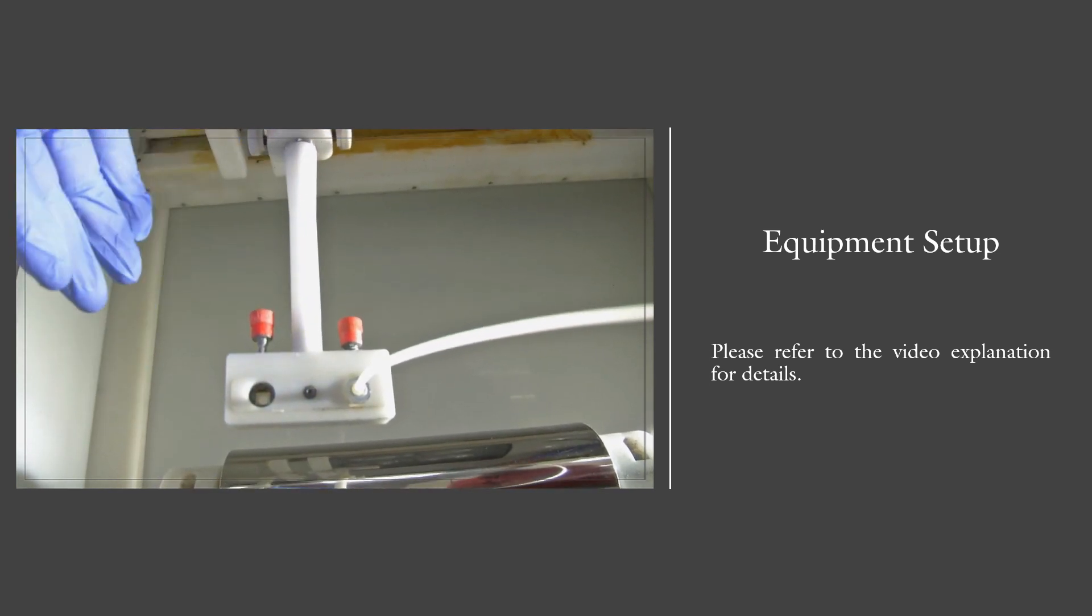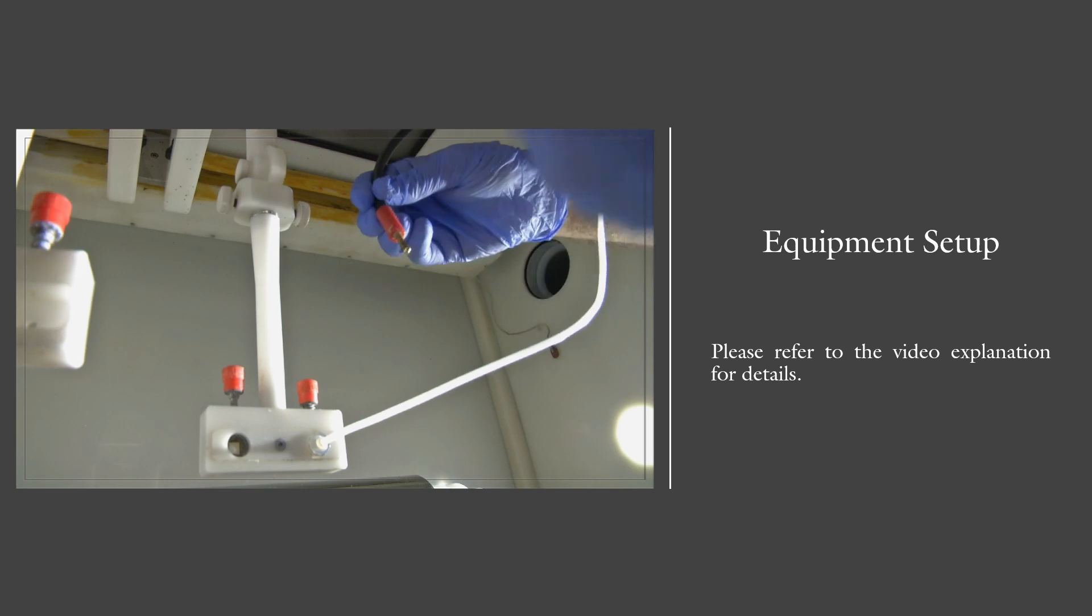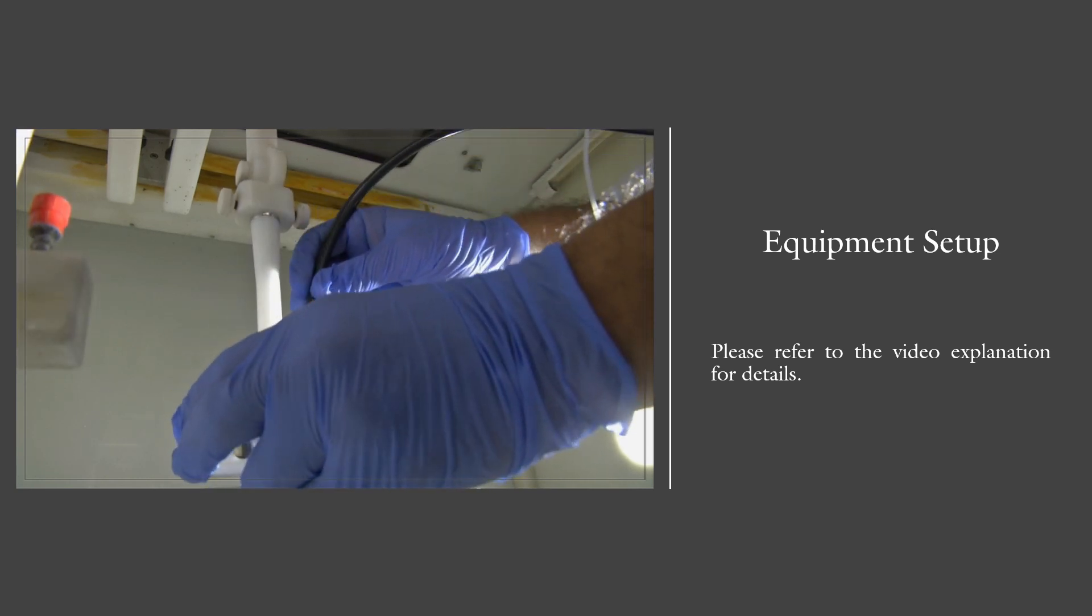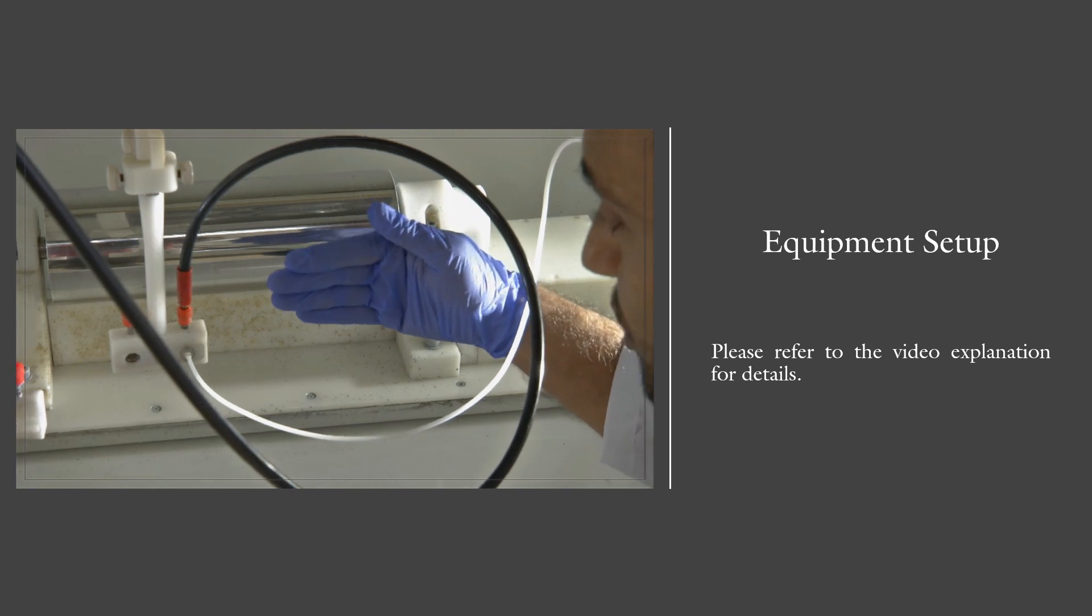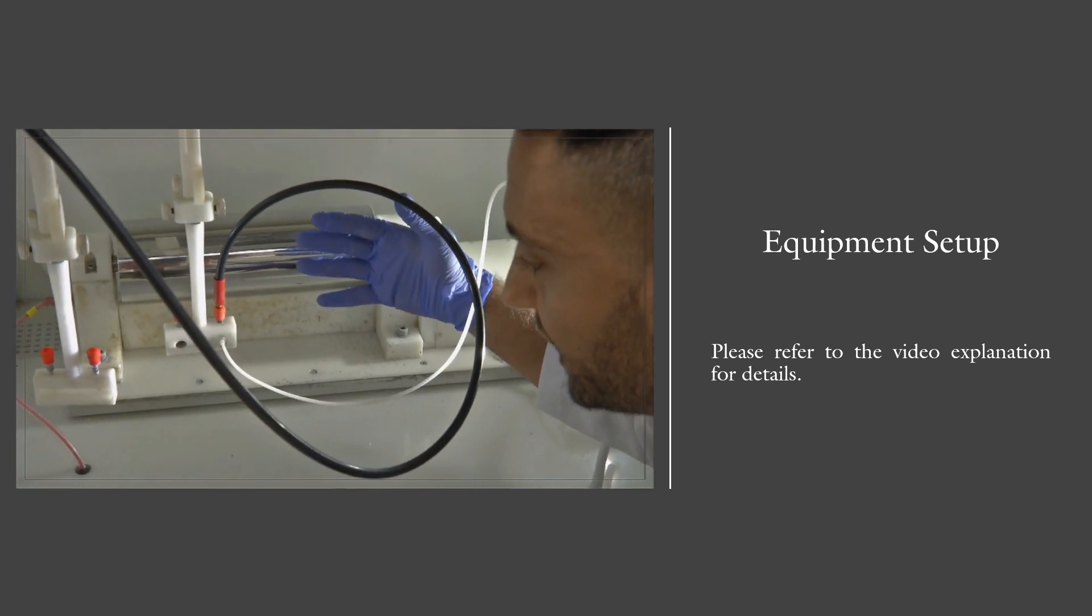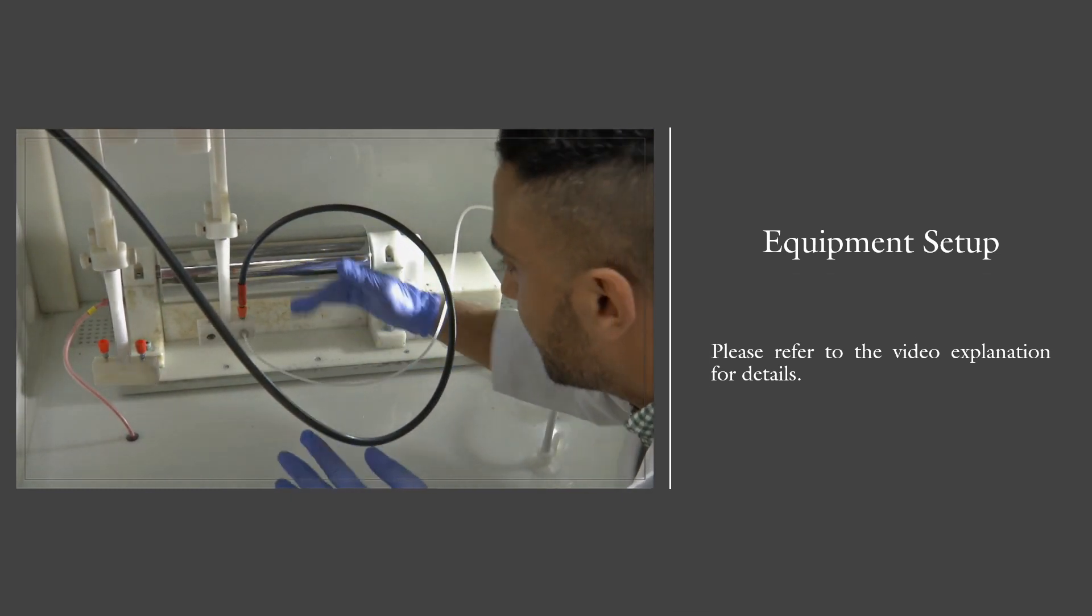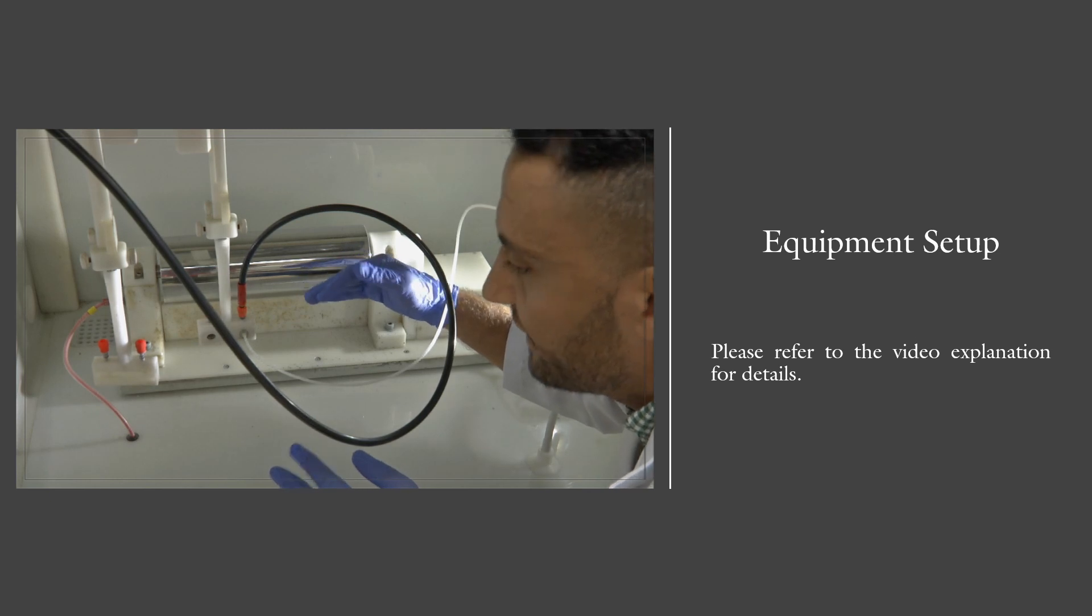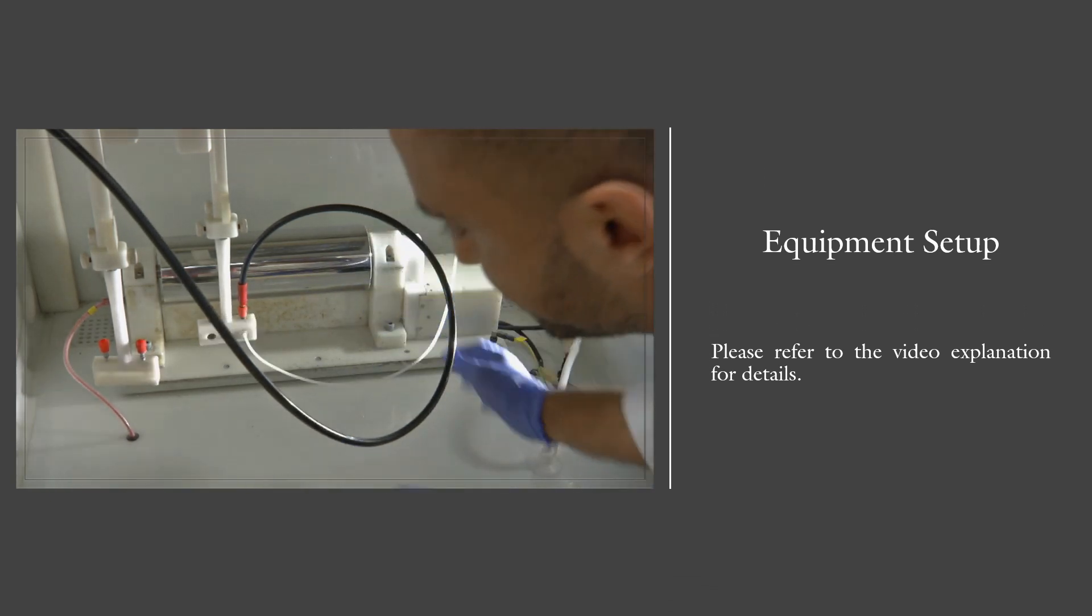Then the electrical voltage. This is the voltage connector. We need to connect it to the needle to electrify the solution. We need to make sure the distance between the needle and the collector is accurate based on the literature, because each distance will affect the production of the fibers. That's it for the connection.